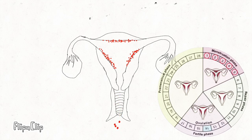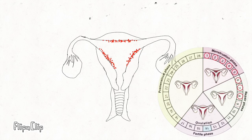After the menstruation stops, the next day onwards is called the repair phase. During this phase, the uterine lining starts to rebuild and thicken. Blood vessels in the uterine lining are formed and ready to receive the implantation of a fertilized ovum. This phase takes place around day 6 to day 11.